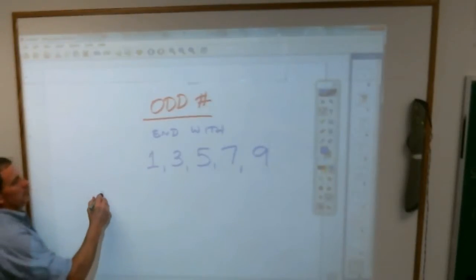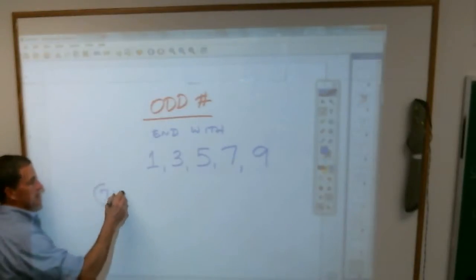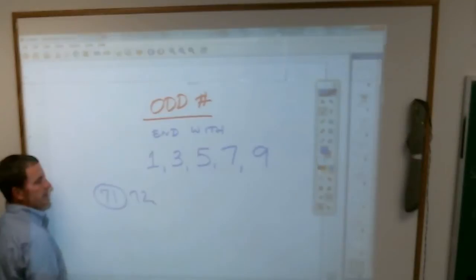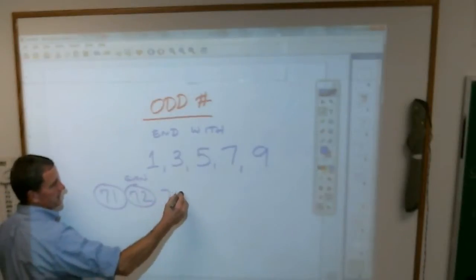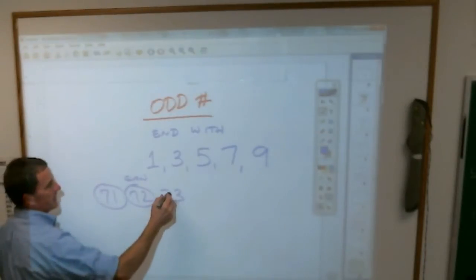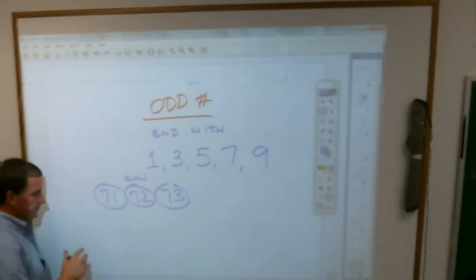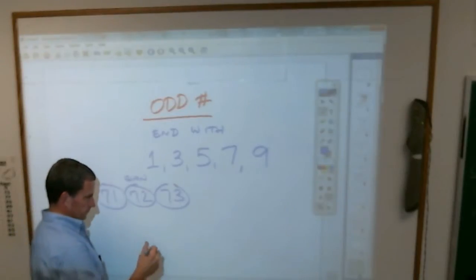For example, 71. Is it odd? Yes. 72, odd? No, it's even. I guess I should write it there. 73, odd, right? Ends with a 3. How about, well, let's do this.